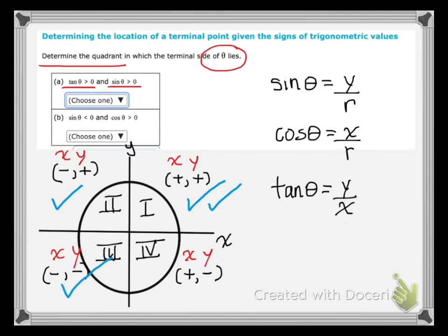Well, theta has to satisfy both conditions, it can't satisfy one or the other. So the place where theta satisfies both conditions would be the first quadrant. So for part A, I know that theta is in the first quadrant. First quadrant would be how I respond to part A.